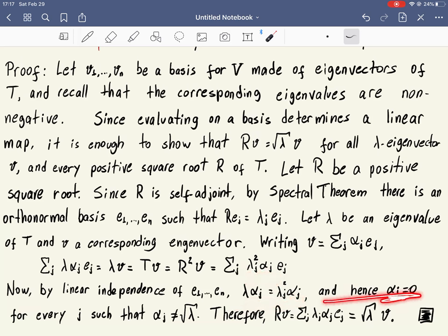So, alpha has to be zero for every J, such that alpha J is different from the square root of lambda. Therefore, when we write what is R applied to V, that will be, this is V. When we apply R, since these EJs are all eigenvectors, then we get the eigenvalue here in front. But these alphas, they are zero for every J, except those where lambda J equals the square root of lambda. So, this gives exactly square root of lambda times V. That means Rv equals the square root of lambda times V. And this is true for every V eigenvector.